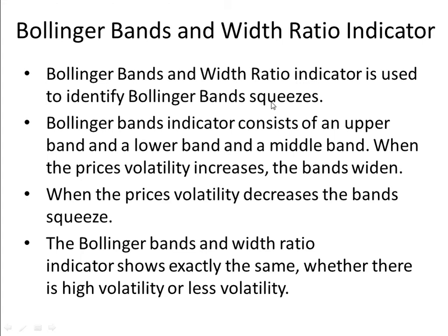The Bollinger Bands indicator consists of an upper band, a lower band, and a middle band. When price volatility increases, the bands widen; when price volatility decreases, the bands squeeze. This is the normal behavior of Bollinger Bands. The Bollinger Bands Width Ratio indicator shows exactly the same — whether there is high volatility or less volatility.